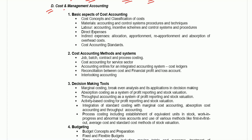Part D is your cost and management accounting. Under that the first topic is basic concept of cost accounting — cost concept and classification of cost, material, labor, direct expenses, indirect expenses, and cost accounting standards. The second topic is cost accounting methods and systems — job costing, batch costing, contract and process costing, cost accounting for service sector, accounting entries for an integrated accounting system, reconciliation between costing and financial profit, and interlocking of accounts.